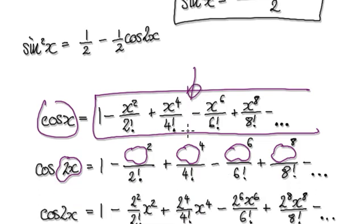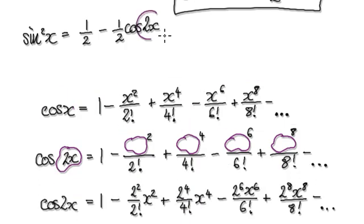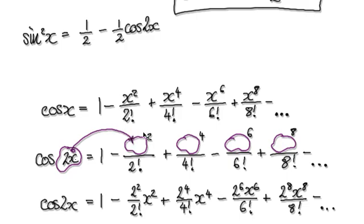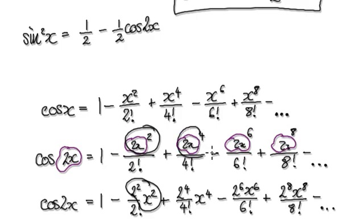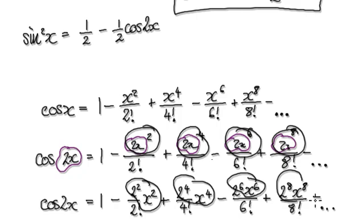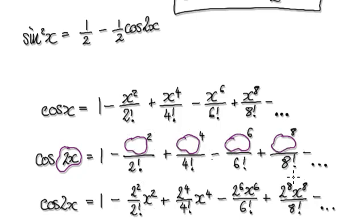And then to obtain this 2x, we would imagine this 2x to be in the bubble, and then put this 2x into here. So here you have 2x, and then here you have 2x, 2x, 2x. And then tidy this up, that will then give you this. Tidy this up, that will then give you this. Tidy this up, that will then give you this. Tidy this up, that will then give you this. And so on.